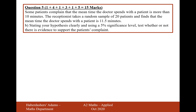Some patients complain that the mean time the doctor spends with a patient is more than 10 minutes. The receptionist takes a random sample of 20 and finds that the mean time the doctor spends with a patient is 11.5 minutes. Stating your hypothesis clearly and using a 5% significance level, test whether or not there is evidence to support the patient's claim. So the null hypothesis is that the mean is 10 minutes, and the alternate hypothesis is that the mean is bigger than 10.